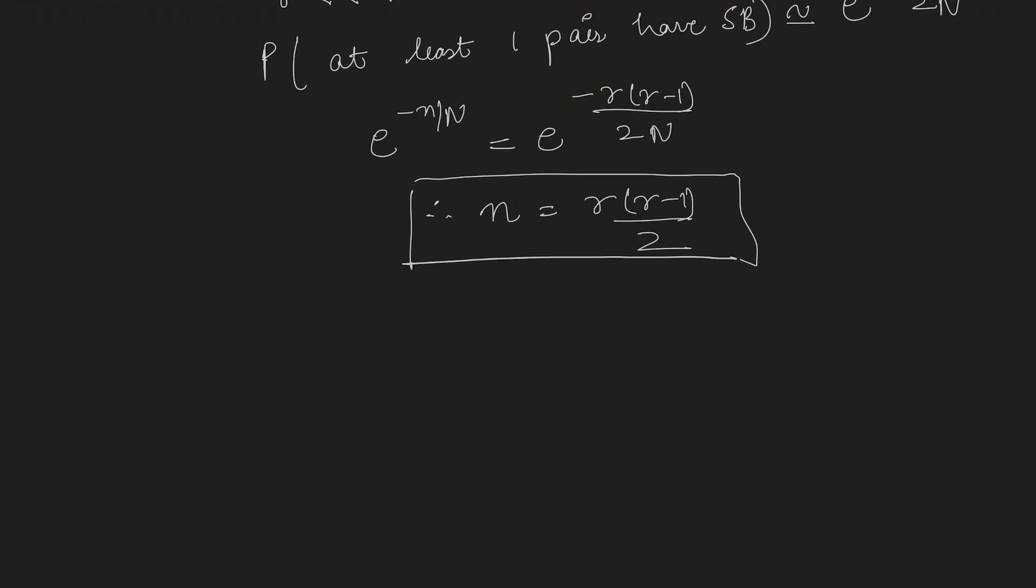There is another explanation which is a physical interpretation. If there are r people in the birthday pairing problem, we have r choose 2 pairs for birthday matching, or r times r minus 1 by 2 opportunities for a match.